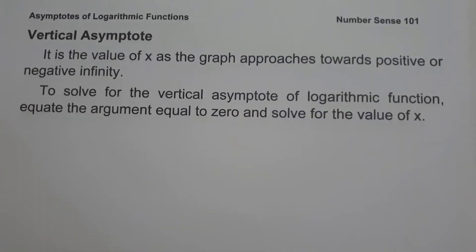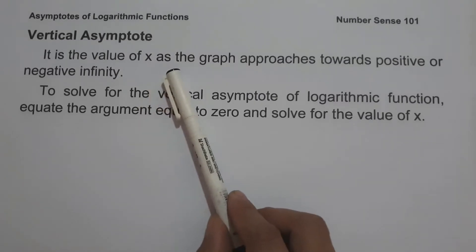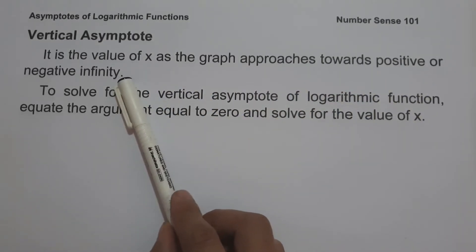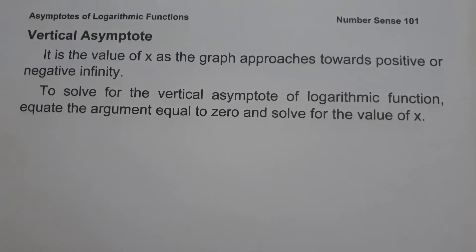When we say vertical asymptote, it is a vertical dashed line — it is the value of x as the graph approaches toward positive or negative infinity. To solve for the vertical asymptote of a logarithmic function, simply equate the argument equal to zero and solve for the value of x. And those are the basic concepts you need to remember in order to determine the asymptotes of logarithmic functions.